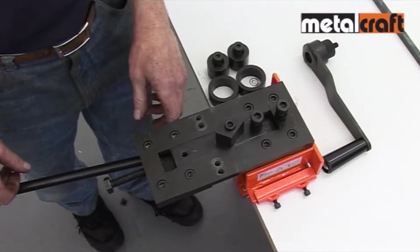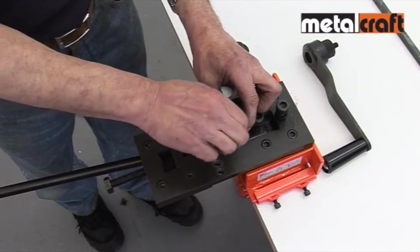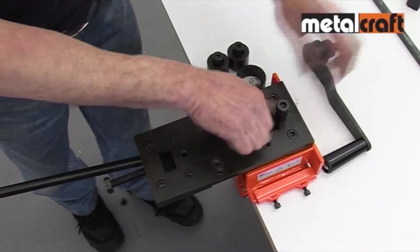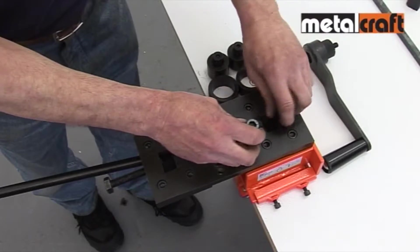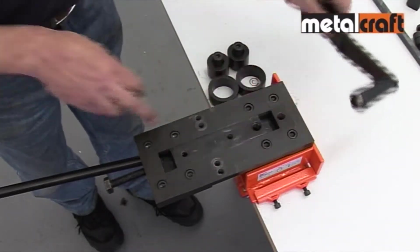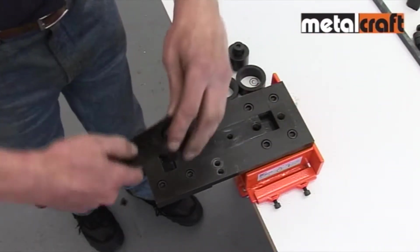The next function we're going to look at is rolling curves and circles. To set up the tool, you start by removing the bending head and rivet posts. Then you fix a winding handle into the hole at the end of the centre slide.